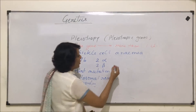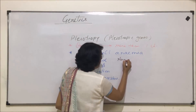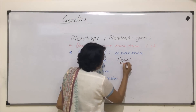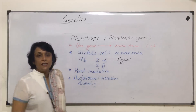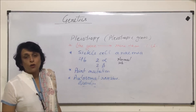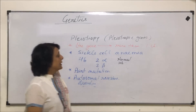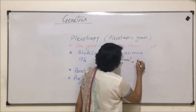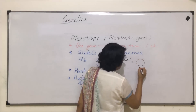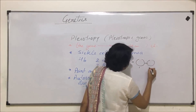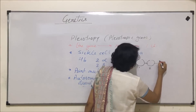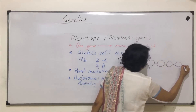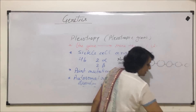Let us understand this point mutation. If we talk about our normal hemoglobin beta chain, there are amino acids. This polypeptide is made up of amino acids at positions 1, 2, 3, 4, 5, 6, 7 and so on.